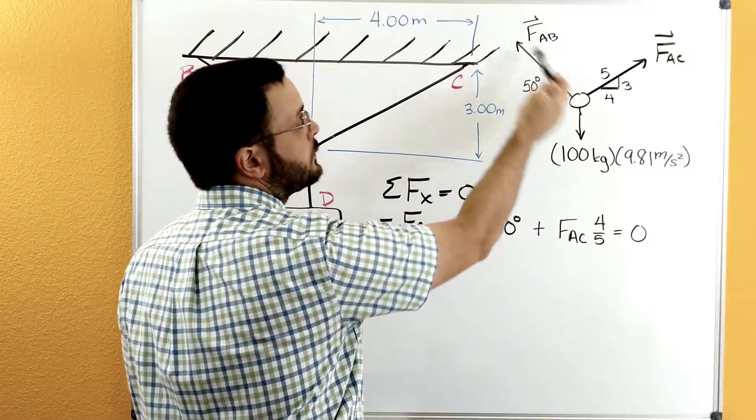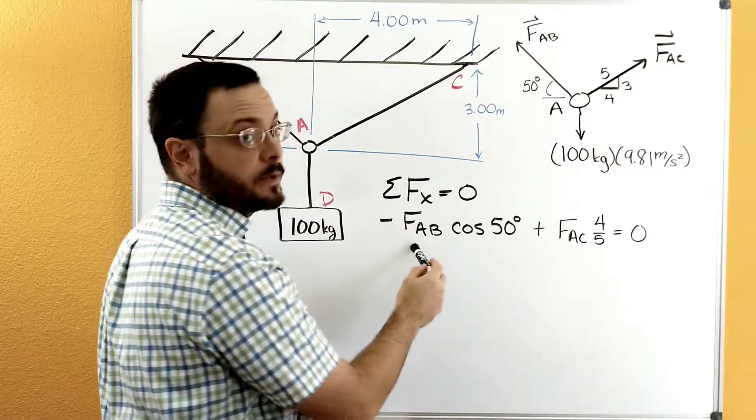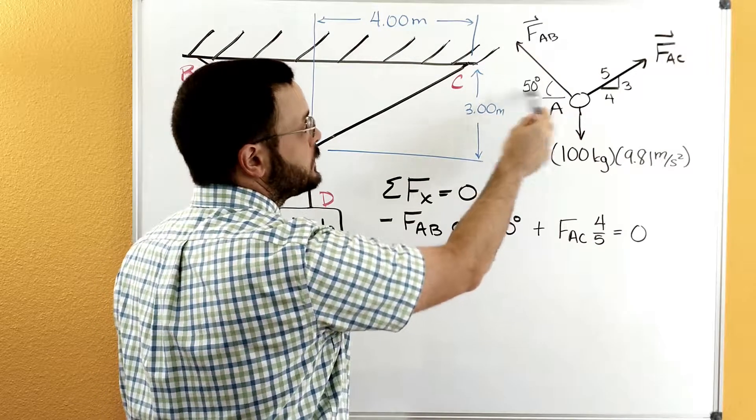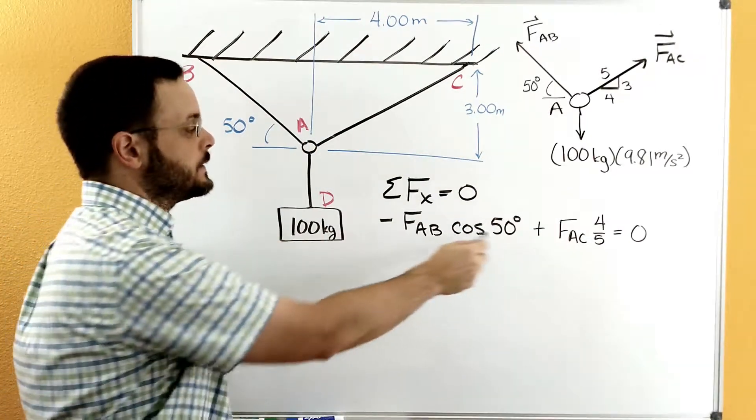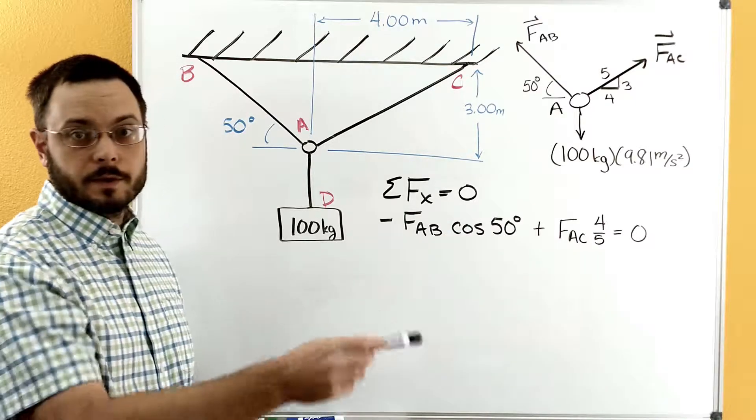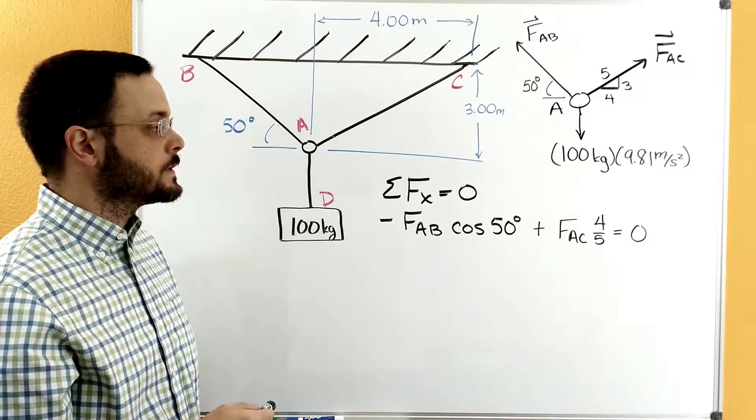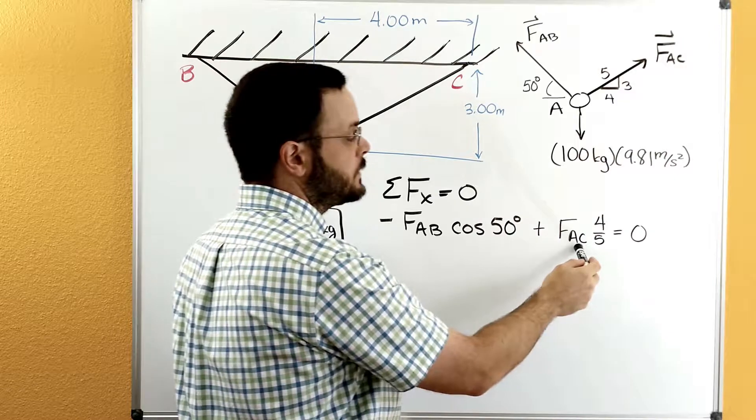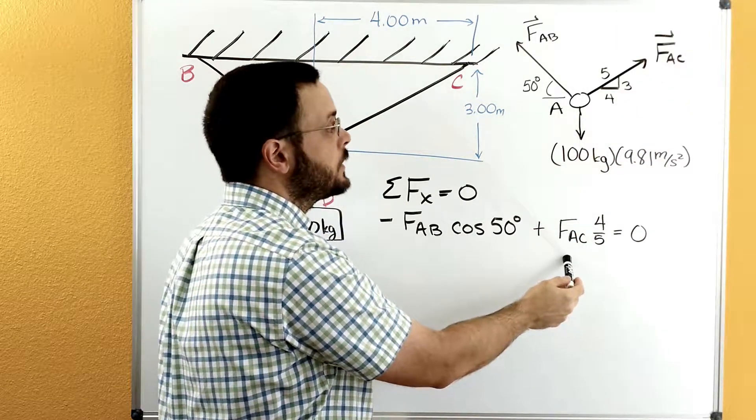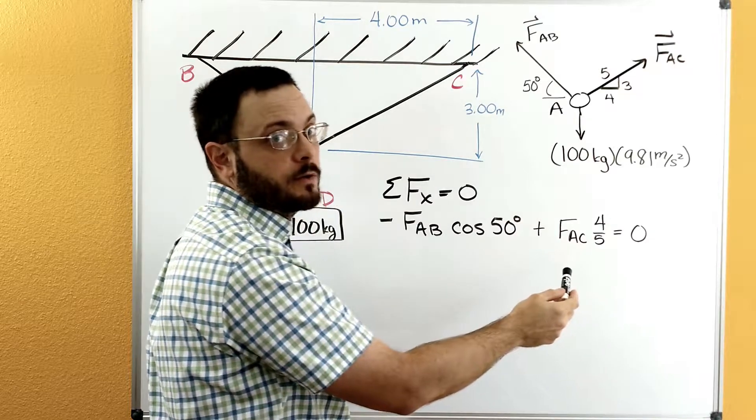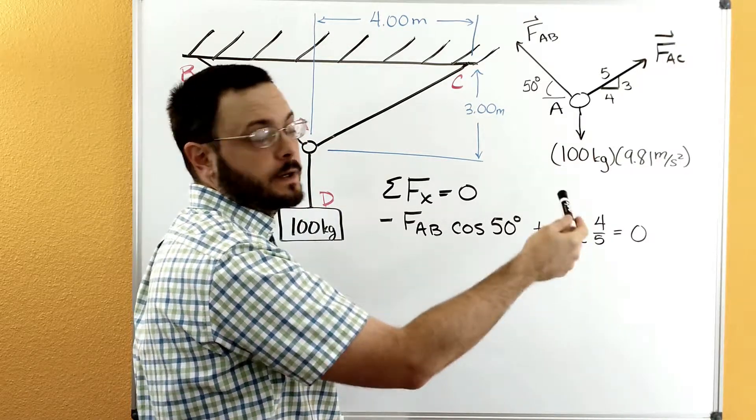and we have the x component from FAB. So the magnitude of FAB times the cosine of 50 degrees. We're using cosine because the x side is adjacent to that angle, it touches the angle of 50 degrees. Then over here with our similar triangles, we're going to still use the magnitude of FAC